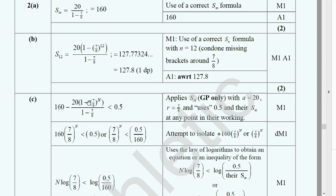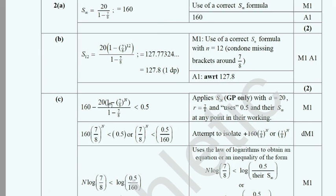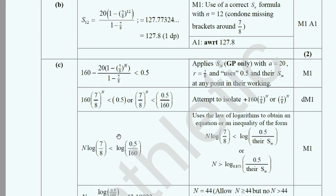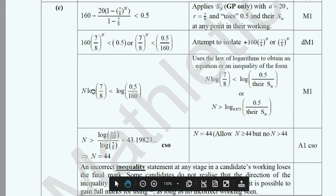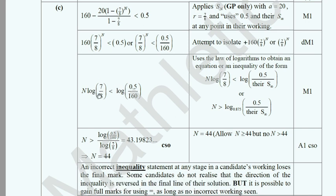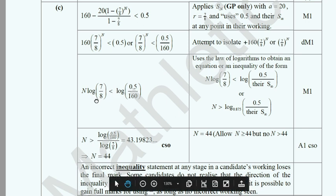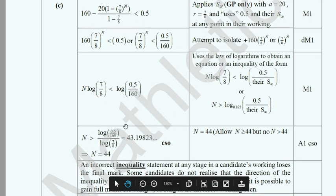You solve this inequality by taking log on both sides. When shifting a negative term to the right side, check whether it is negative — if so, the inequality sign flips from less than to greater than. Solving this gives the value of n.